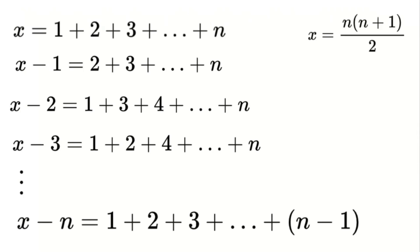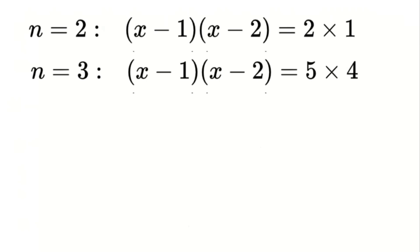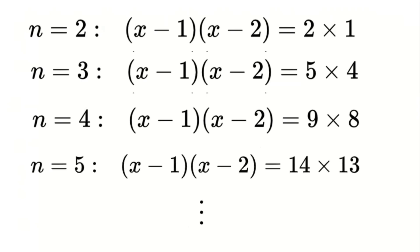Now let's observe the pattern by calculating the products for small values of n. For n equals 2, (x minus 1)(x minus 2) equals 2 times 1. For n equals 3, it equals 5 times 4. For n equals 4, it equals 9 times 8. For n equals 5, it equals 14 times 13. Do you see a pattern emerging? Let's dig deeper.